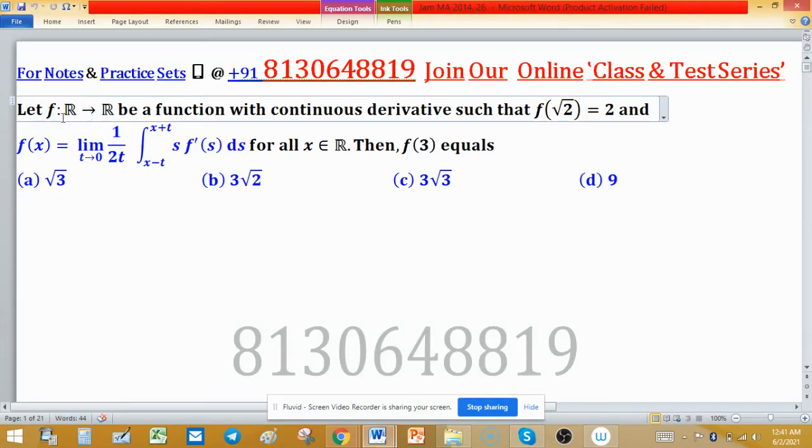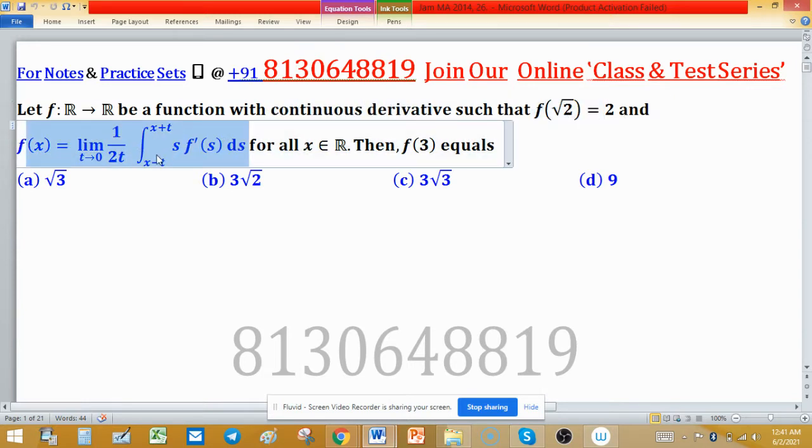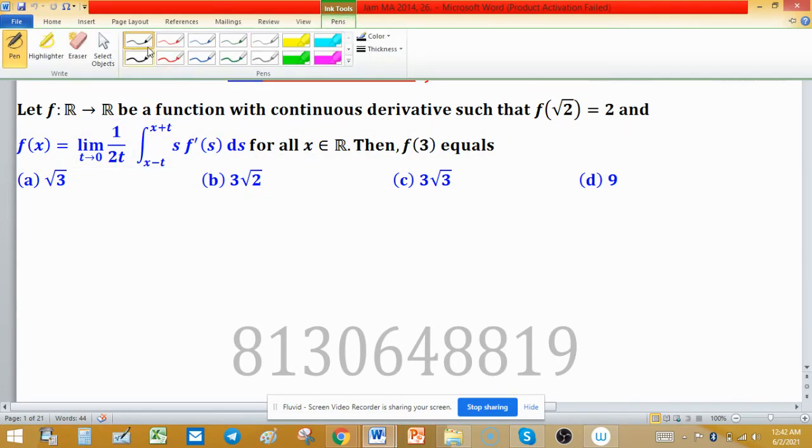Let f be a function defined from R to R with continuous derivative such that f(√2) = 2. And fx is defined by this formula: limiting t tends to 0, 1 upon 2t in this integral. This is true for all x which are real. Then f(3) is equal to what? So we have to find the value at 3.